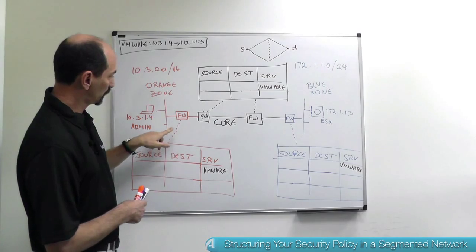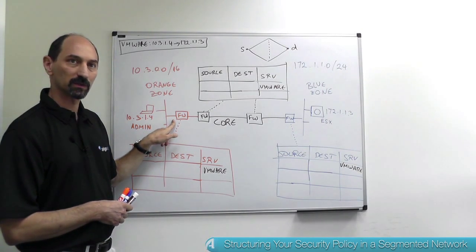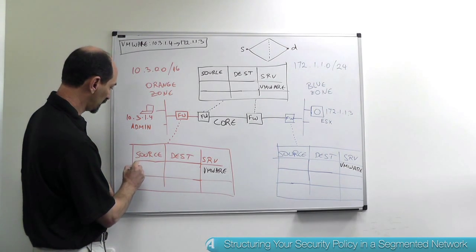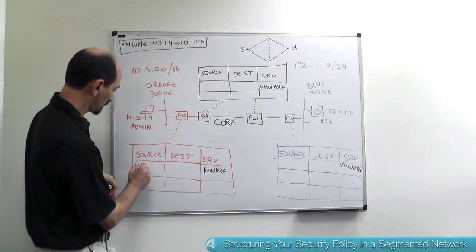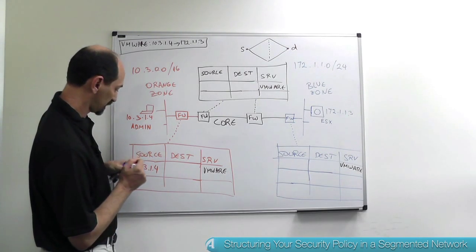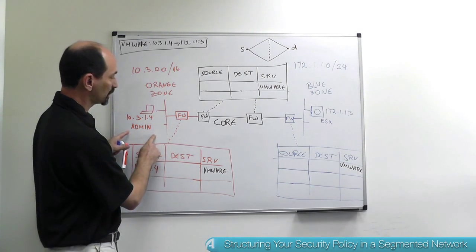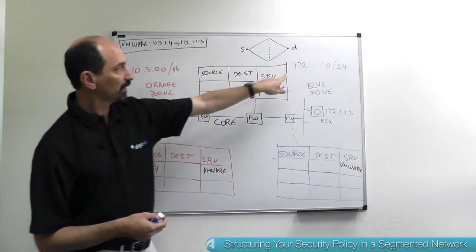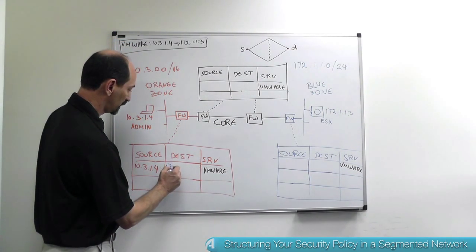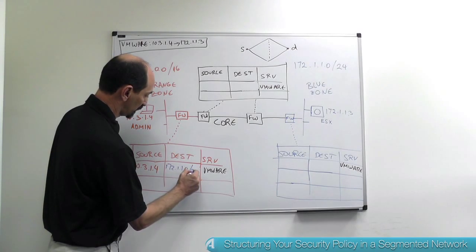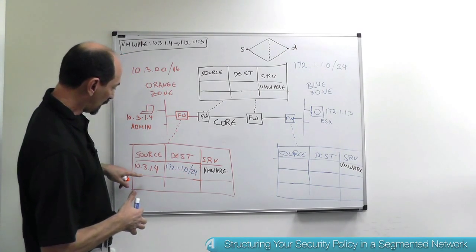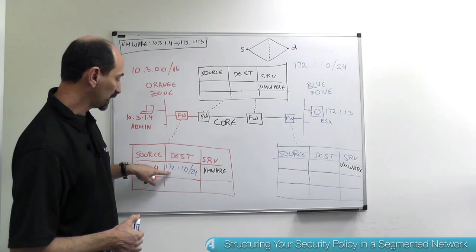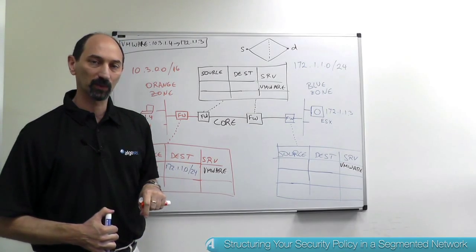Specifically, when you're close to the source, so you're over here in the orange firewall that's right next to the source, you can be very specific regarding the source. So you just list the IP address of the administration workstation. So just that one IP address. But in terms of destination, you're very far away from the blue zone. So you can just write the whole subnet here. So 172.1.1.0/24. So allowing traffic to exit just from that one administration system, but it can go to anywhere in the blue zone with the VMware service.